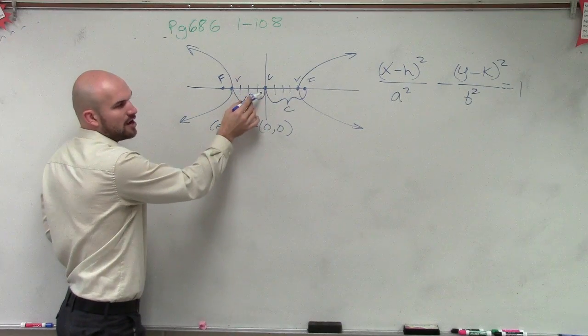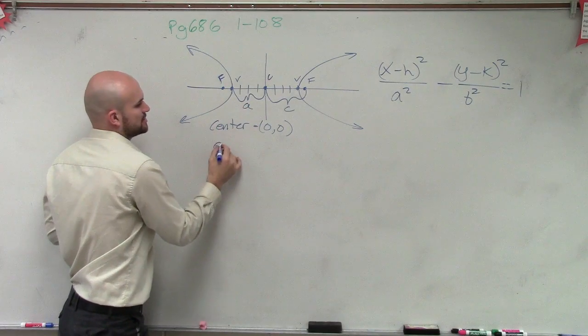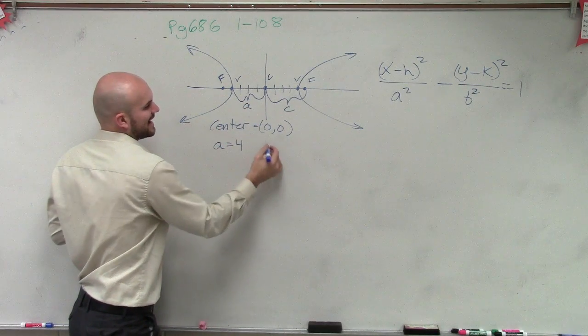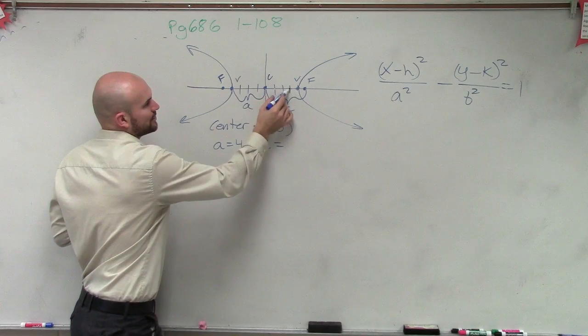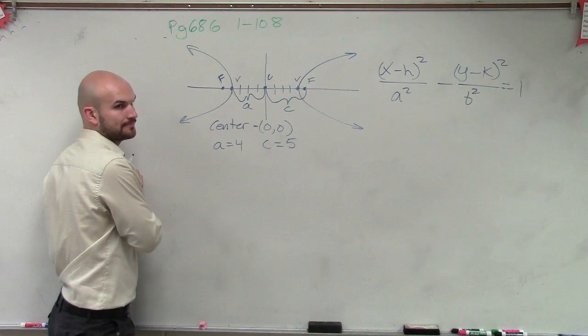So our a, how far are we traveling to get to our a? 1, 2, 3, 4 units. So a equals 4, and c equals 1, 2, 3, 4, 5. Does that make sense?